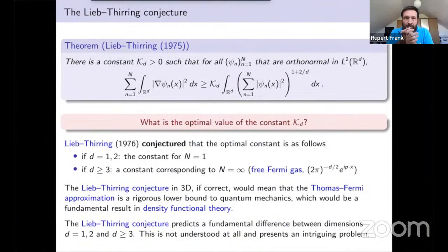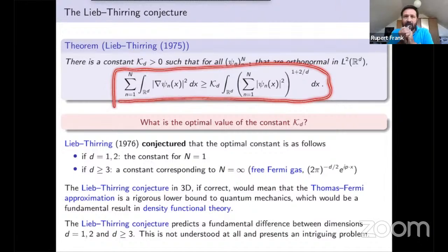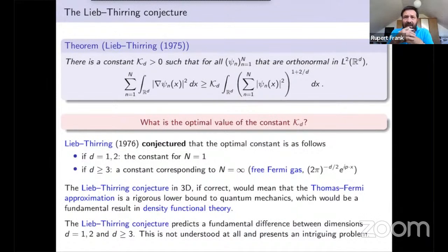Let us now come to the constant that appears in the inequality. The question I want to spend some slides on is: what is the optimal value of this constant — how large can we choose it so that the inequality is true? Lieb and Thirring back in 1976 made a conjecture about the optimal value of that constant.